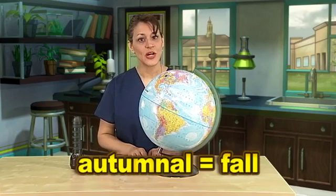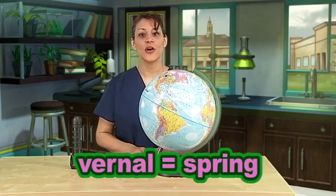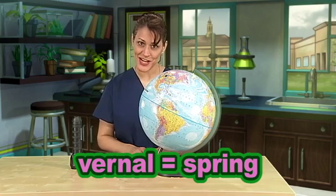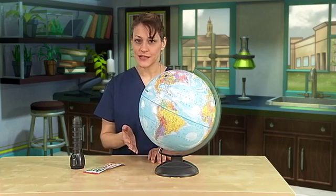One, called the autumnal, occurs in fall. The other, called vernal, occurs in spring. Whether you live in the northern hemisphere or the southern hemisphere is of no concern. The axis is not tilting at this time.